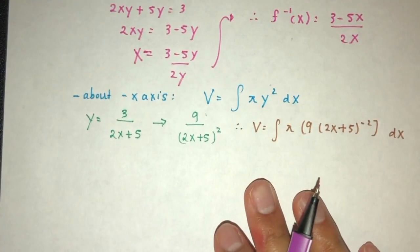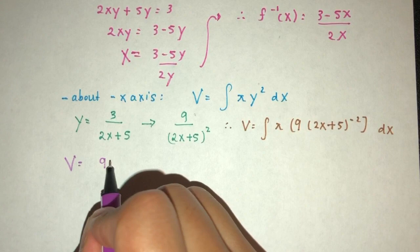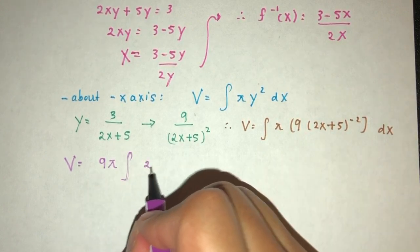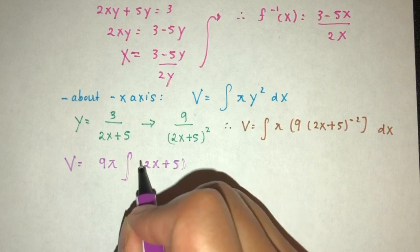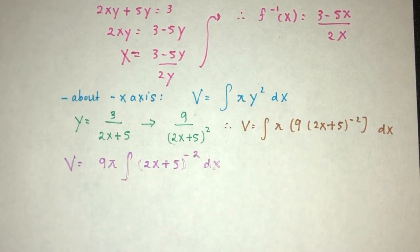Like this. And then finally, let's see what do we have. We have v, 9 pi, and then we have to integrate the value here. Here we have (2x plus 5) power minus 2. So here we have to integrate this. How can we do this? Pretty easy.